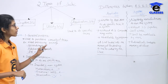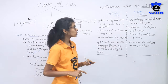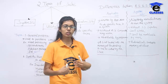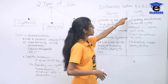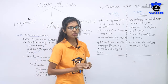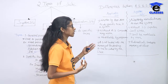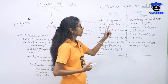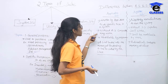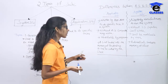Difference between application software and system software: application software is written by application developers, whereas system software — the main example being operating system — is written by the manufacturer to run the system. Without application software the computer may still work, but without system software the computer cannot work.